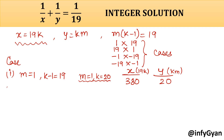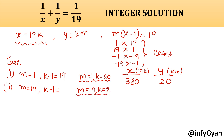Second case: m is equal to 19 and k minus 1 is equal to 1, so m equals 19 and k equals 2. Then x is 19k, which is 38. And y is km, which is 19 times 2, so y is also 38.